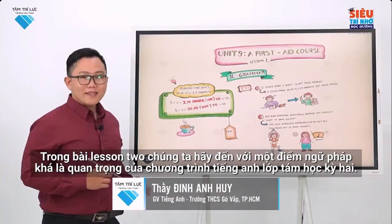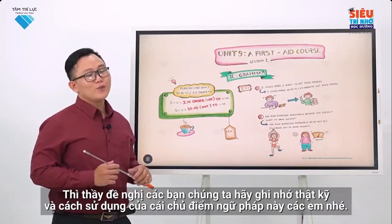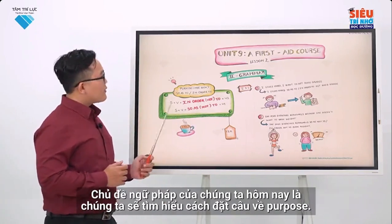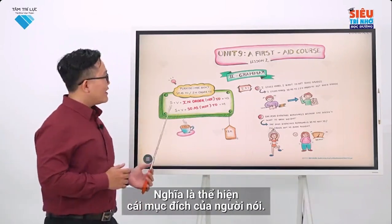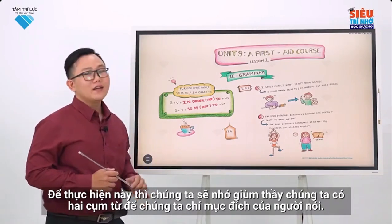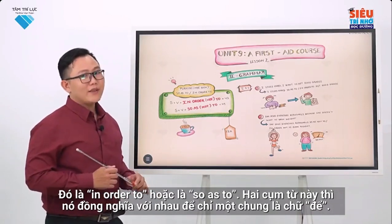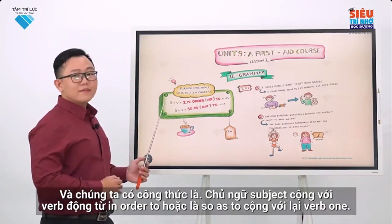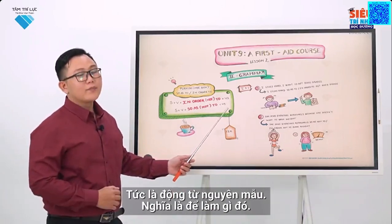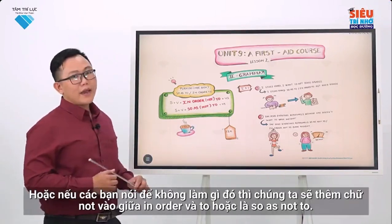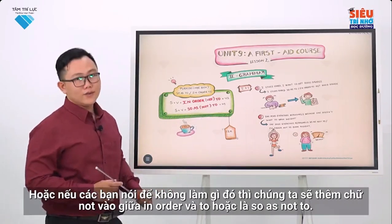Now let's come to the grammatical content. In Lesson 2, let's get into a grammar that is quite important in 8th grade English, Semester 2. I recommend you remember it carefully and how to use it. The topic is how to make sentences about purpose — to express the purpose of the speaker. We have two phrases: 'in order to' or 'so as to.' These two are synonyms, equivalent to the word 'for.' The structure is: Subject + Verb + in order to / so as to + Verb 1 (infinitive form). For a negative purpose, we add 'not': in order not to, or so as not to.